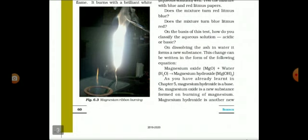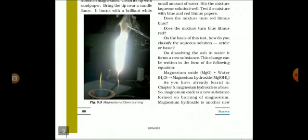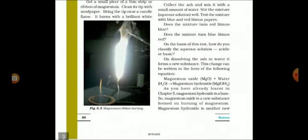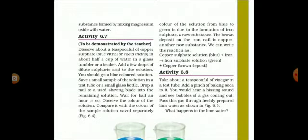As you have already learned in chapter 5, magnesium hydroxide is a base. And always keep this thing in mind that oxides and hydroxides are always basic in nature or bases. Whatever the element is there, if it is oxide or hydroxide, then it is always basic in nature. So magnesium oxide is a new substance formed on burning of magnesium. Magnesium hydroxide is another new substance formed by mixing MgO with water.